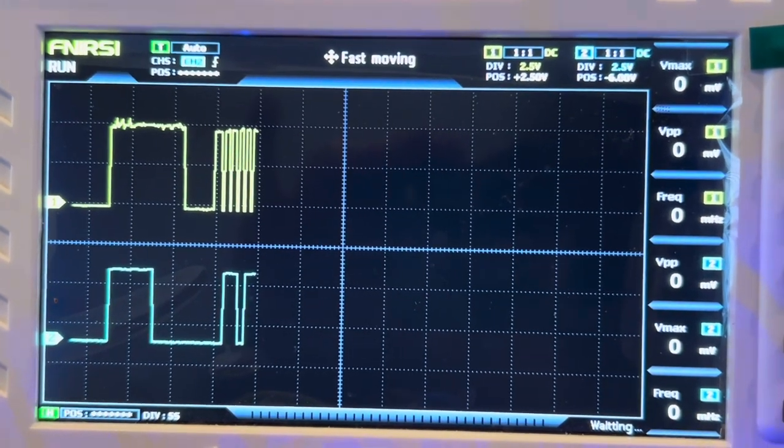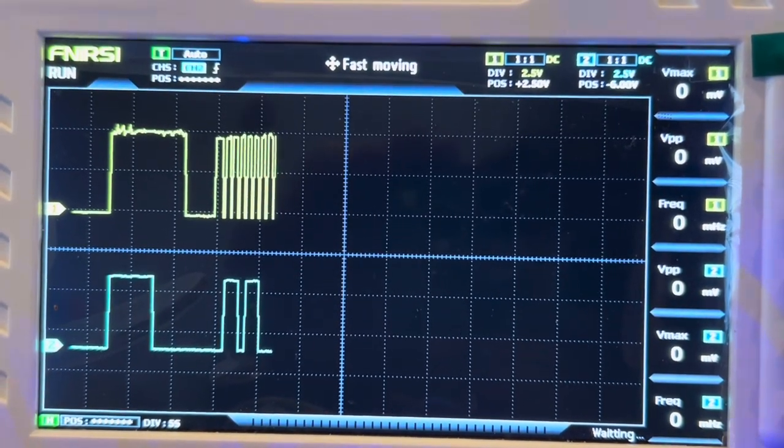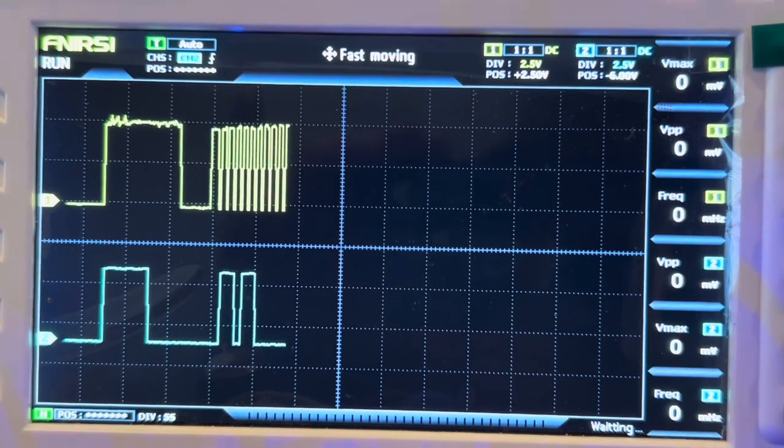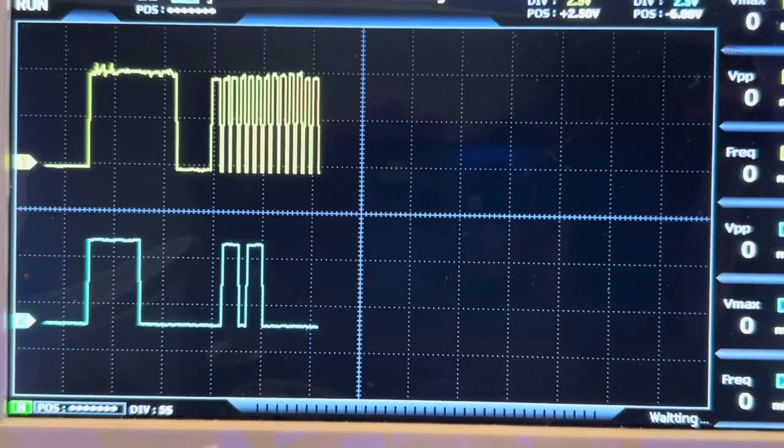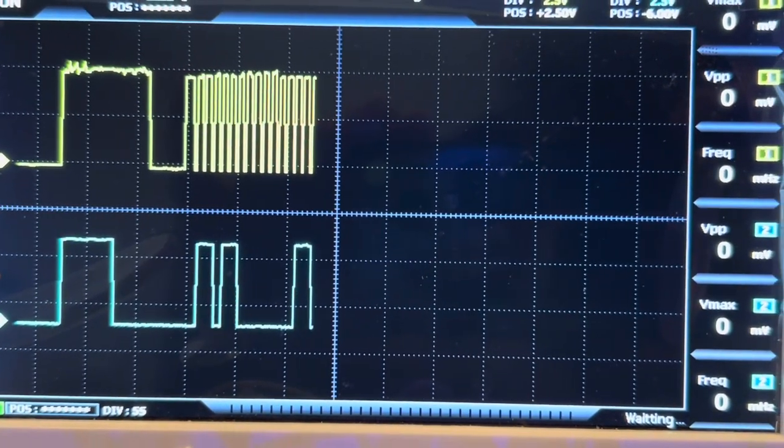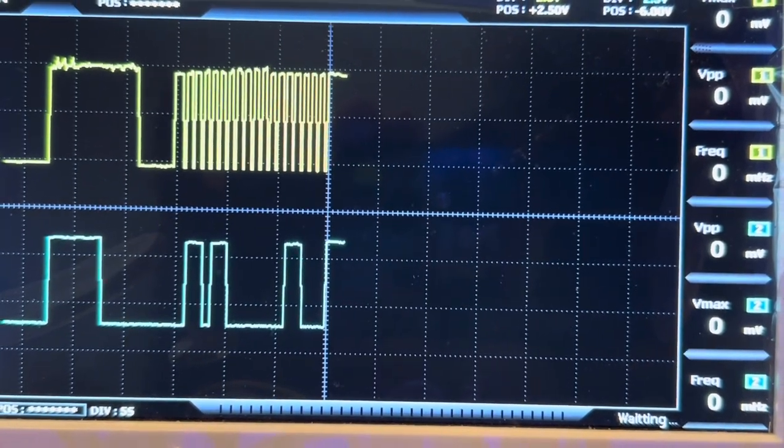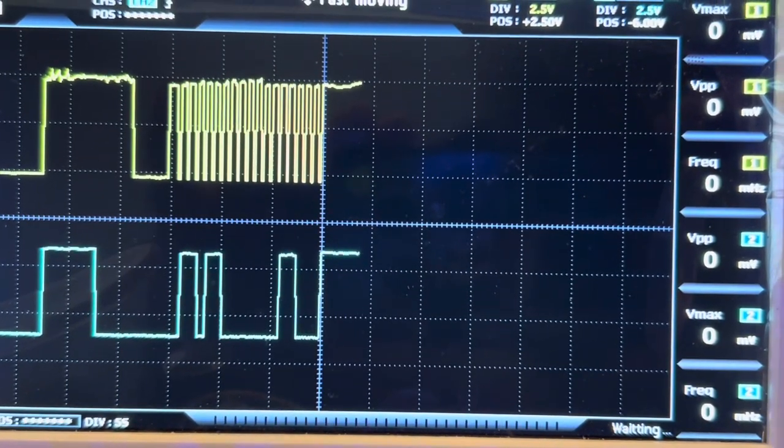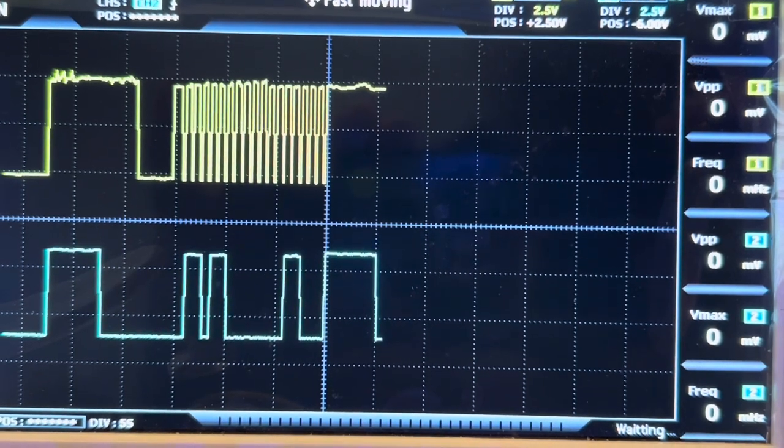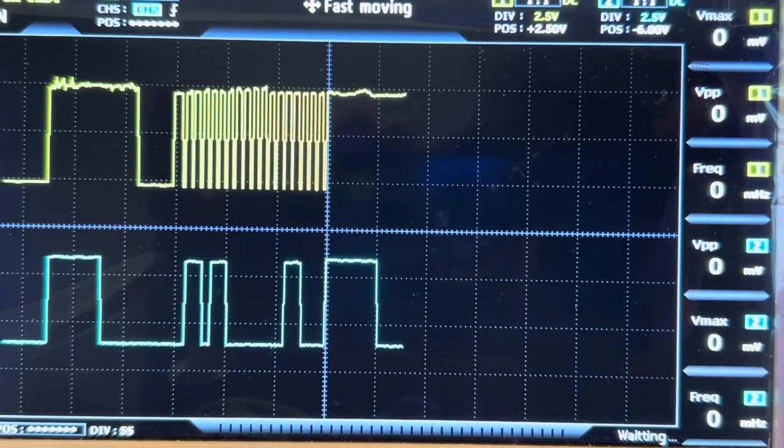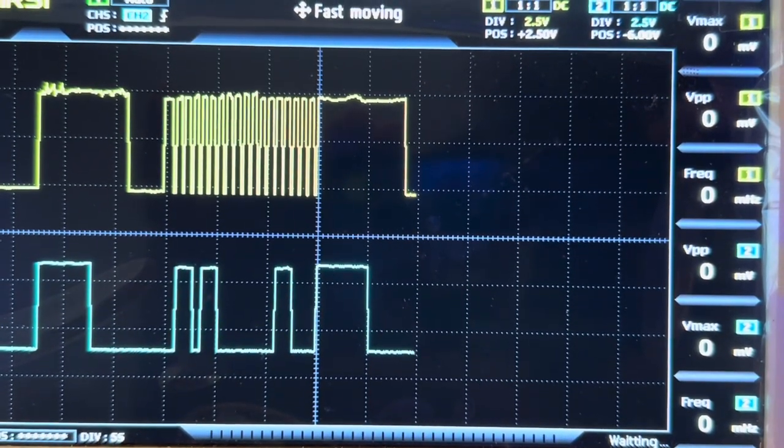And the first sequence is about to begin. And it's clocking in the 0, 1, 1, 0, 1, 1, 0, 0, followed by another acknowledge bit. And then a repeat start condition. And the data line always has to go down before the clock line.